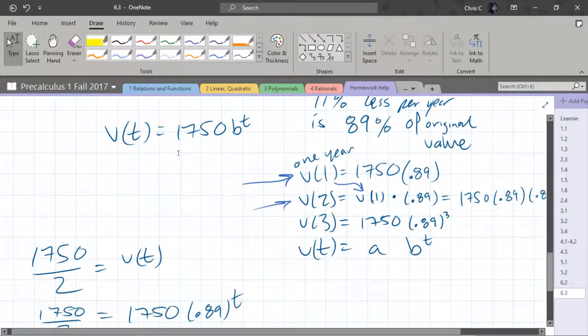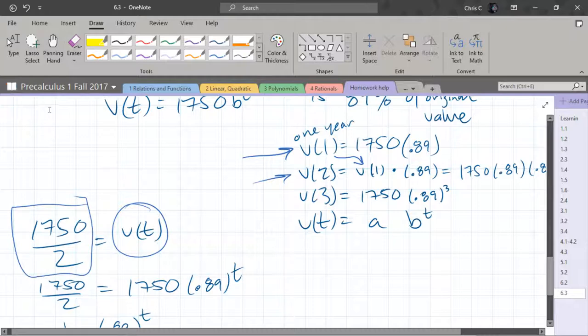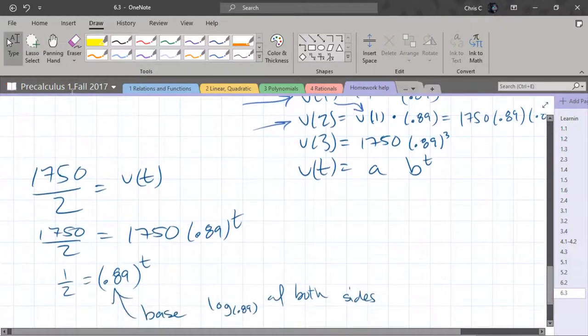And we want to know half. We want it to lose half the value. We don't want our computer to lose half its value, but it will lose half its value, and we want to know how long that will take. So what I did is I set up V of T equals half of the original value, and we want to then solve for T. So here's our V of T function on the right side. First thing I'm going to do is divide by 1750. It'll cancel out both of those and leave us with a half on the left.